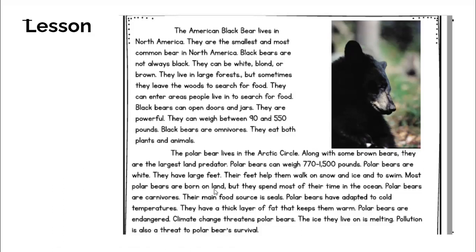So what was paragraph four mostly about? Well, it was talking a lot about the characteristics of polar bears — what polar bears are like. They talked about how much they weigh, where they live, that they're carnivores, what their main source of food is, how they've adapted to cold temperatures, and what their skin is like.